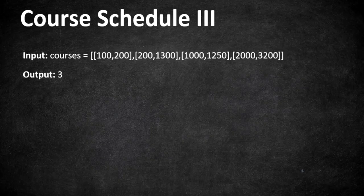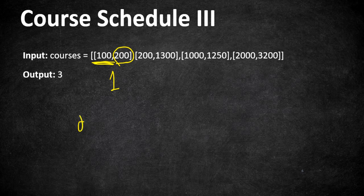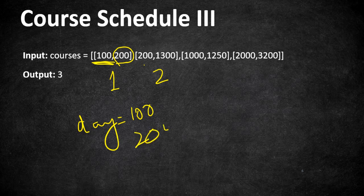Let's go through the given example to understand this problem. The first course has a duration of 100 days and must be completed within 200 days. Starting from day 0, we complete it on day 100. Now we are at day 100. The second course has a duration of 200 days, so starting on day 100 we finish it on day 300.